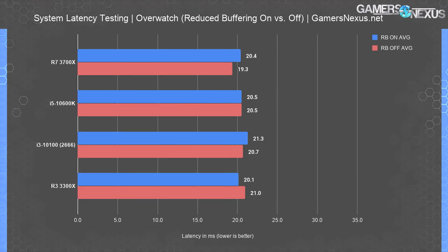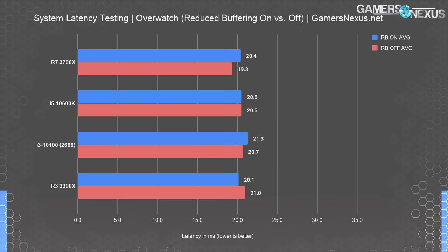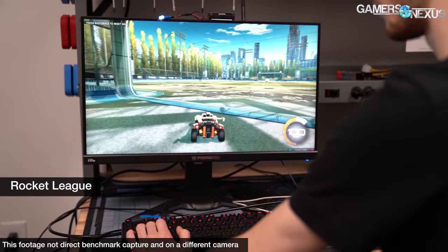The R7 3700X has more 24 to 26 millisecond spikes and 28 to 30 millisecond spikes, which caused its lower rank. This average latency chart is with reduced buffering enabled, which didn't significantly affect performance. We'd expect this setting to have more of an impact if the game were running at a lower frame rate.